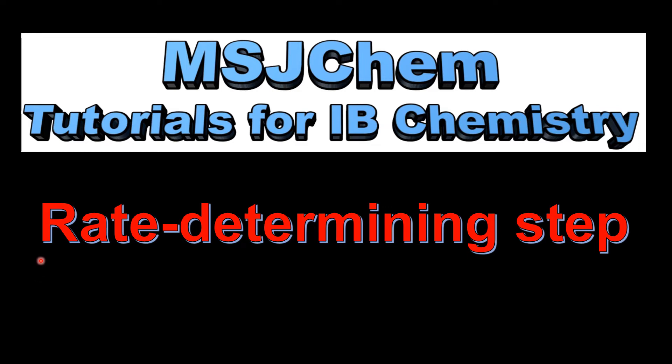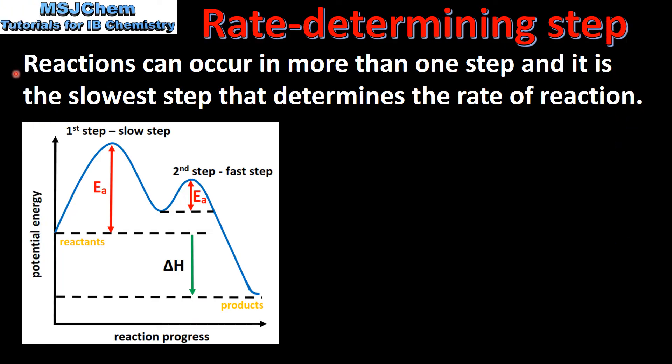This is MSJChem. In this video I will be looking at the rate-determining step. Reactions can occur in more than one step, and it is the slowest step that determines the rate of reaction.